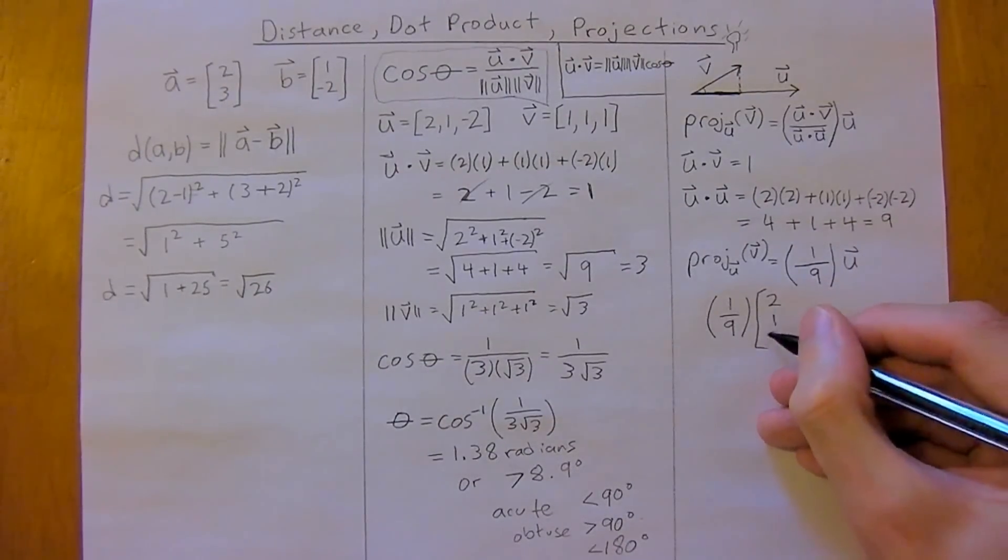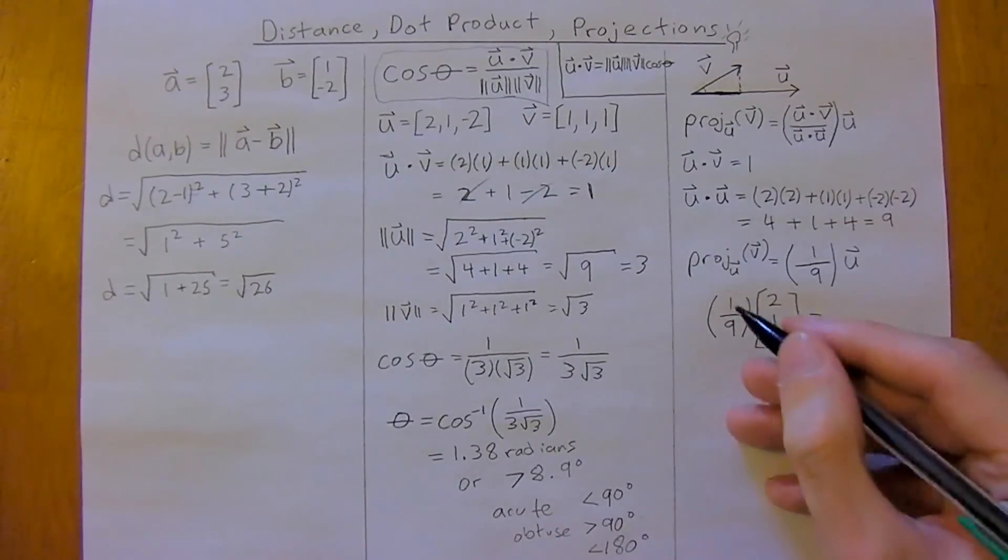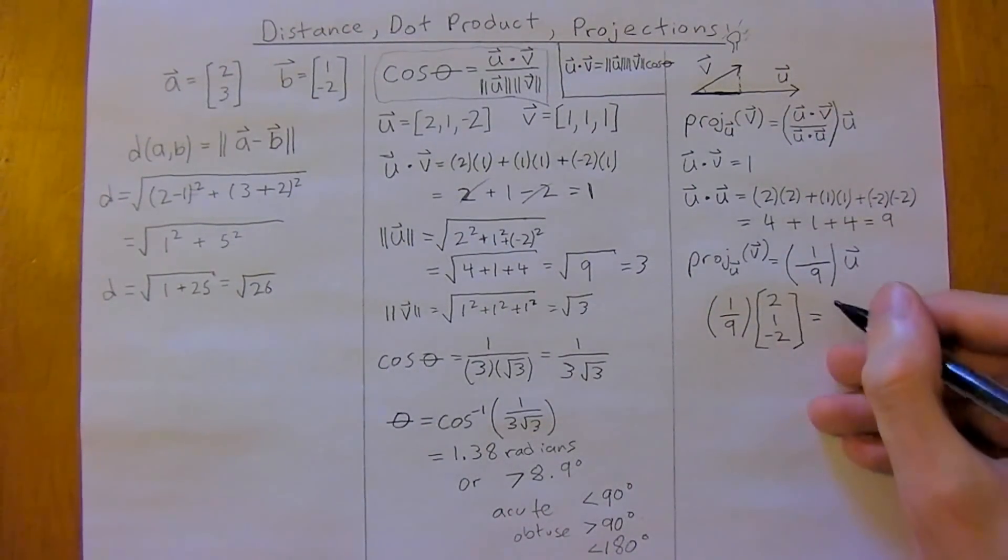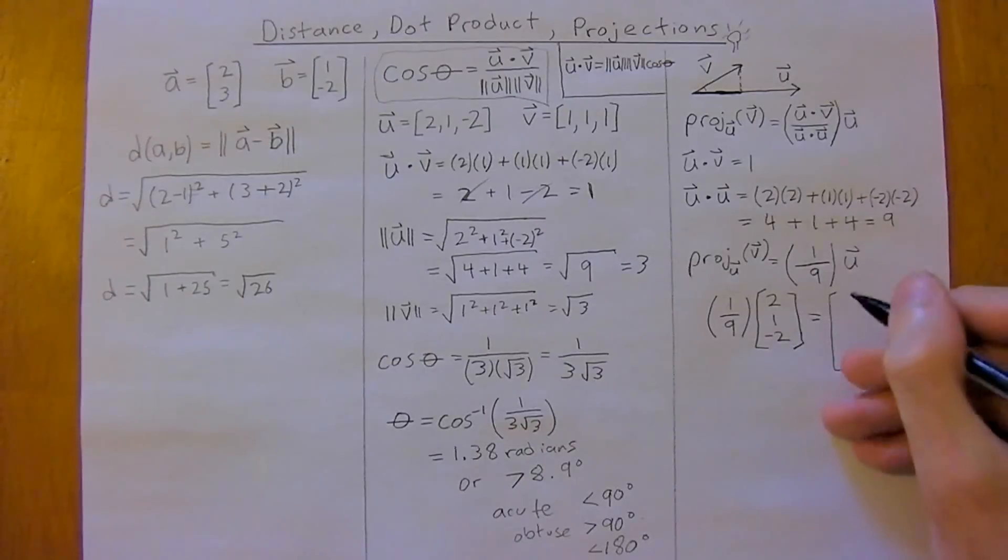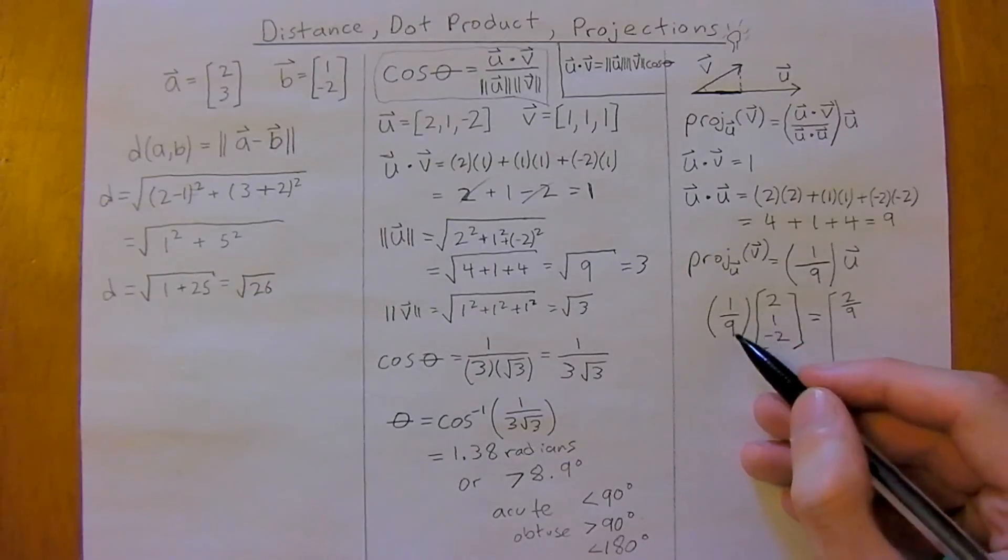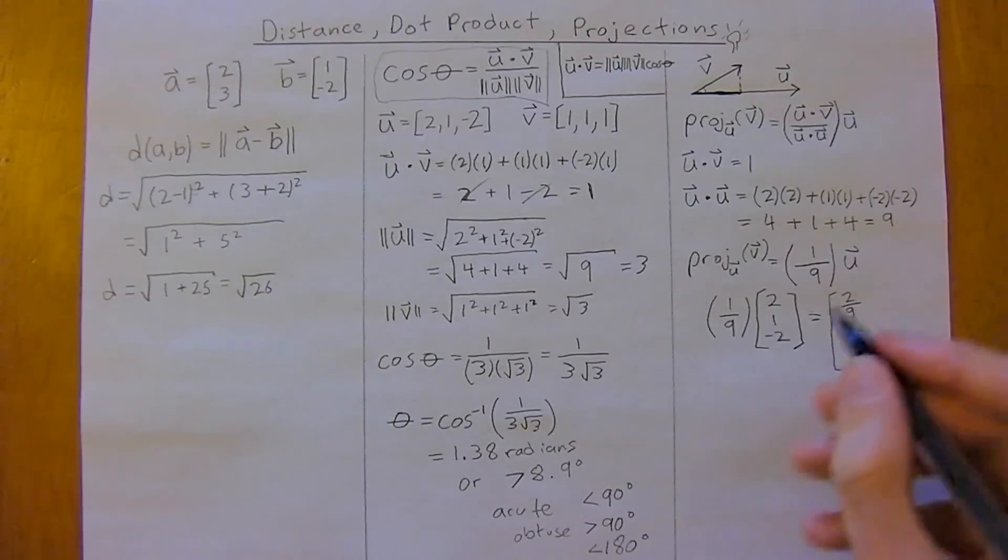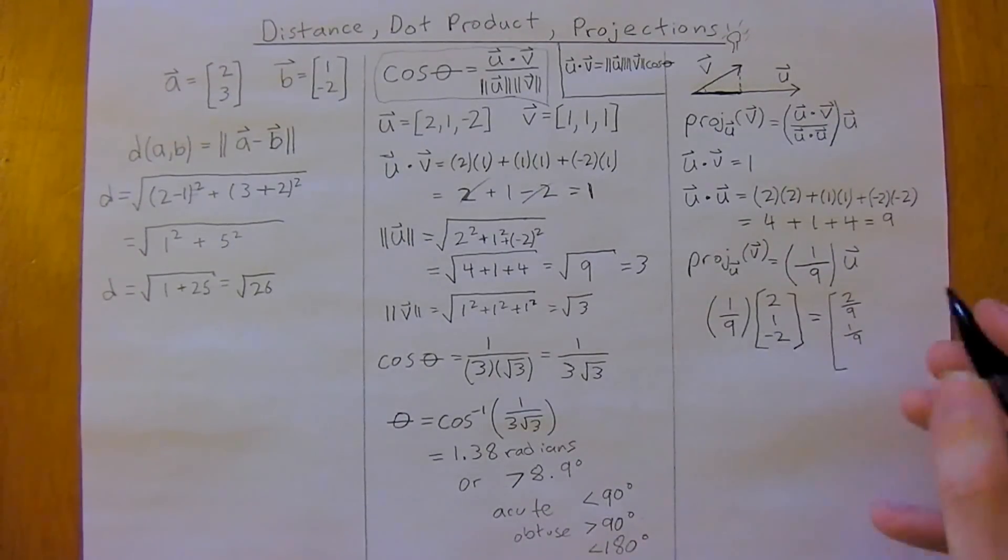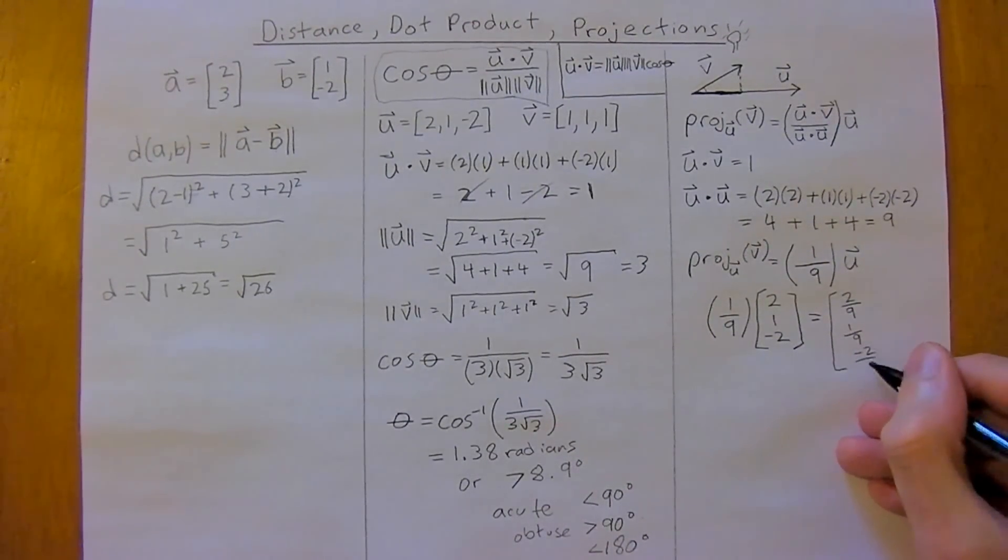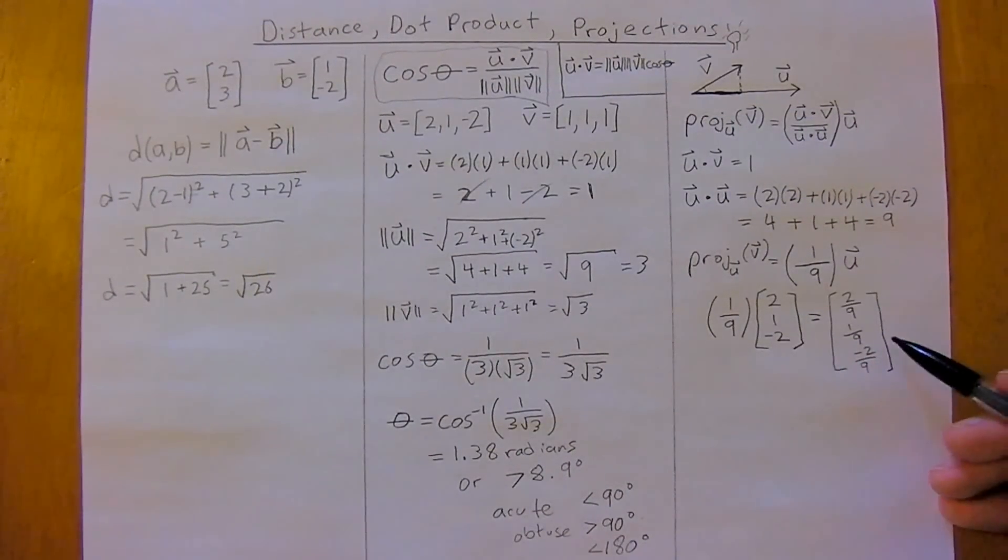so one-ninth times two in the x component, so I'll leave myself some room, so I'm going to get two over nine for the x component, and one-ninth times one is still just one-ninth, and then negative two times one-ninth is negative two over nine, and that is your final answer. Alright, see you in the next video.